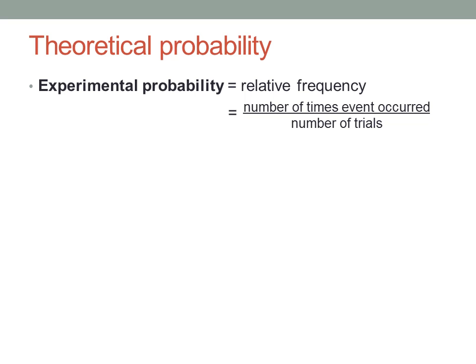Experimental probability needs an experiment to be done first, and then you can calculate the relative frequency of the outcome you're interested in.